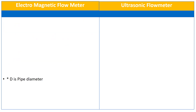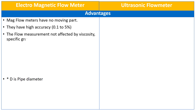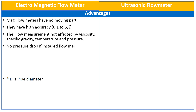Let us see the advantages of electromagnetic and ultrasonic flow meters. In case of electromagnetic flow meters, they have no moving parts, so very less maintenance is required. They have high accuracy of 0.1% to 5%. The flow measurement is not affected by the viscosity, specific gravity, temperature, and pressure of the fluid. There is no pressure drop if the installed flow meter is the same size as the pipe size.